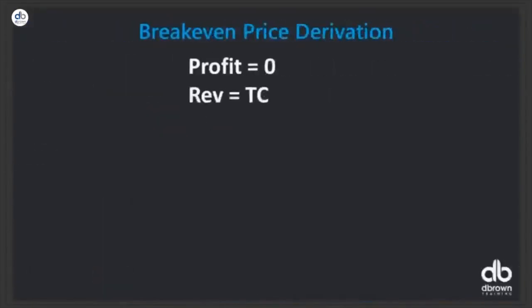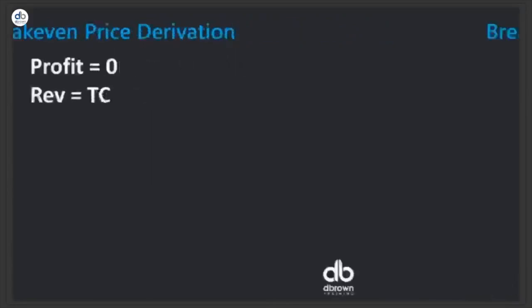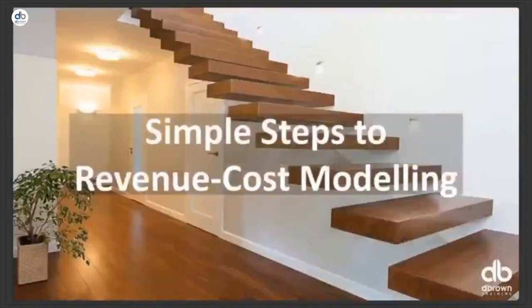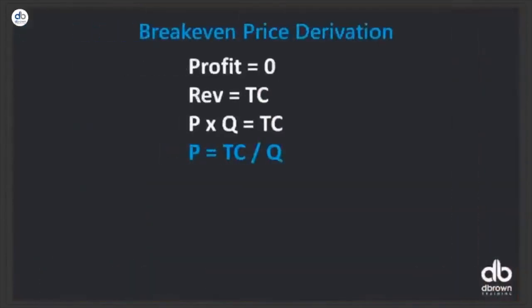Now let's derive break-even price. When profit equals zero, revenue equals total cost. Revenue is price times quantity, so: P × Q = Total Cost, which means Price = Total Cost ÷ Quantity. That's your break-even price — simple.